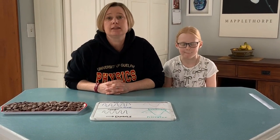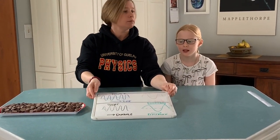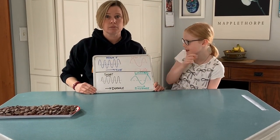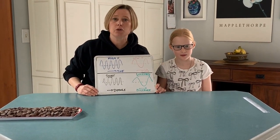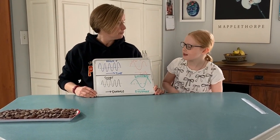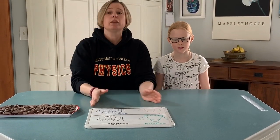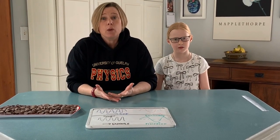You can do this experiment at home in your own kitchen. All you need is a microwave, a ruler, and some chocolate chips. Light is a wave, which means if we know the frequency — how quickly the waves move up and down — and the wavelength — the distance between peaks — and we multiply those two numbers together, we get the speed of the wave.